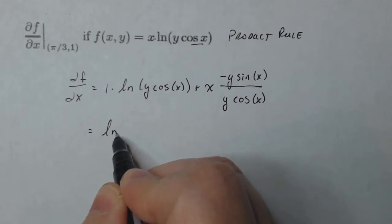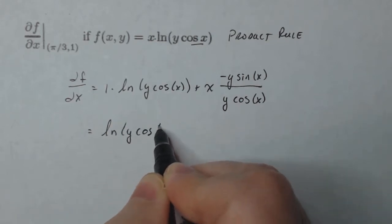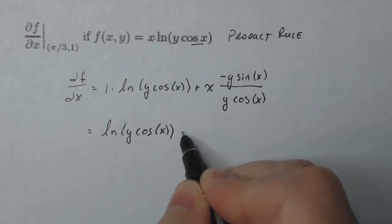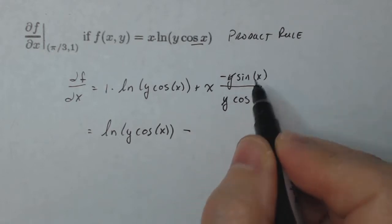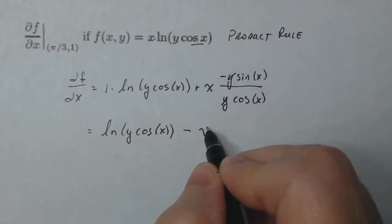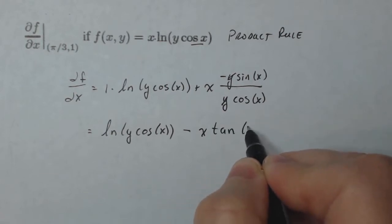So if I simplify a little, I get natural log of y cosine x minus, well, the y's will cancel. Sine over cosine is tangent, so x tangent x.